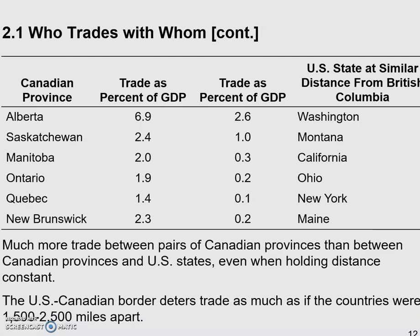So here we wrap up our discussion about the first section of chapter two: who trades with whom? We basically talked about the gravity model and its strong predicting power, along with the exceptions — when this model doesn't work perfectly. The next section of this chapter, we're going to start talking about trading patterns — in other words, what specifically we're trading, like manufacturers versus agriculture versus services.